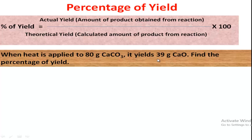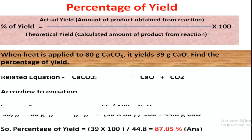From this reaction we obtained 39 grams of calcium oxide. Now we calculate the theoretical yield — from the balanced equation, for 80 grams of calcium carbonate, what is the calculated amount of calcium oxide. From these two data we can find the percentage of yield.